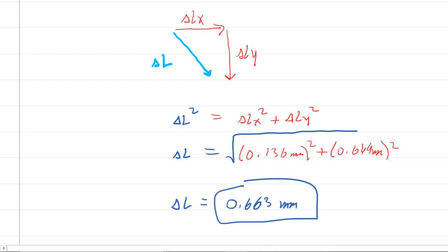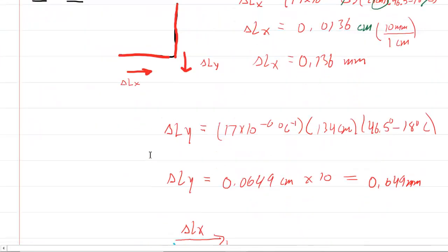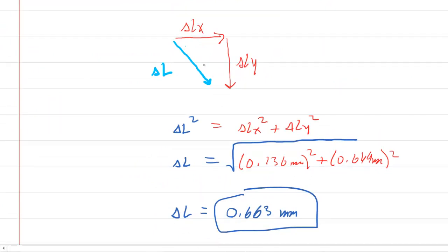I believe we also needed the angle. Let's check it out. We go back and it says, find the magnitude and direction of the displacement. Okay, fine. So the direction is going to be this angle right here. Use a little bit of trigonometry here. We can see that the tangent of that angle is equal to the opposite, which is delta Ly divided by the adjacent, delta Lx. To get the actual angle, we need to, of course, take the inverse tangent.